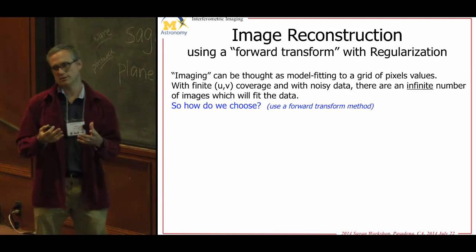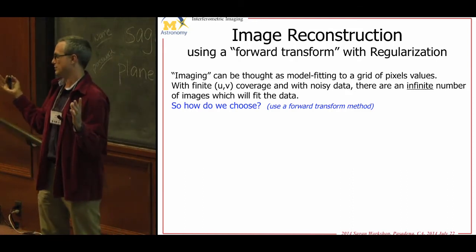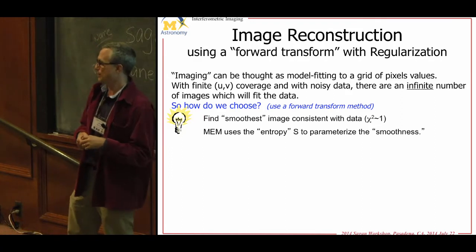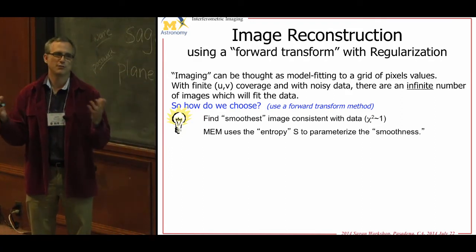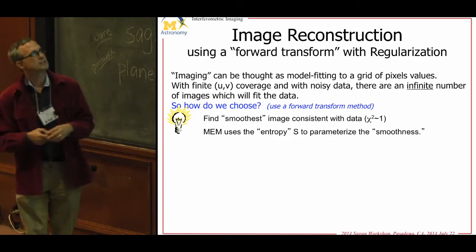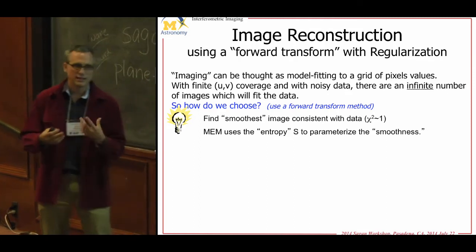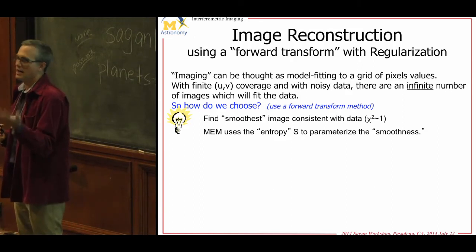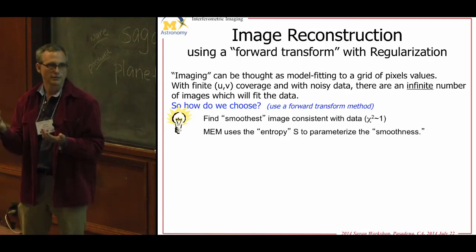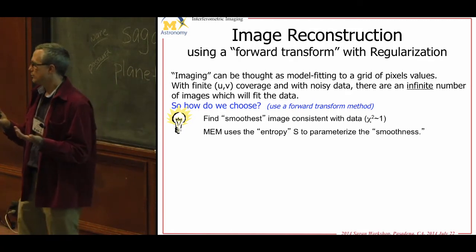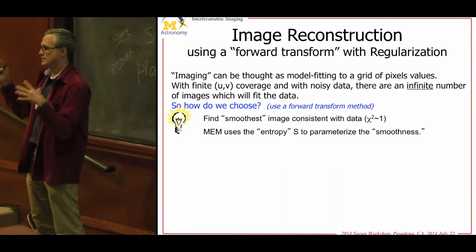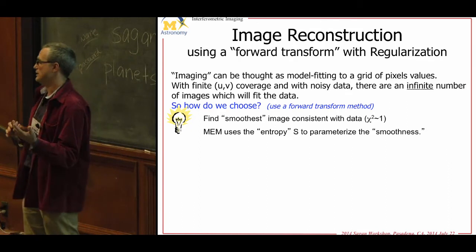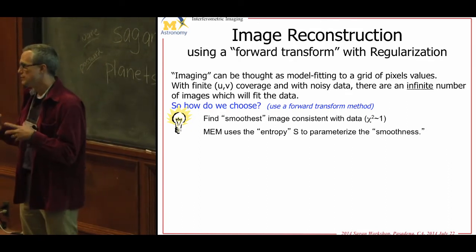You start with hundreds or thousands of degrees of freedom in your fit, but you usually don't have thousands of data points. So how do you do a model fit with thousands of free parameters but only 50 data points? This is an ill-posed problem requiring a regularizer. There is not a unique solution, and there's finite noisy data. You couple a chi-squared analysis for goodness of fit with a regularizer. Usually you want a regularizer for smoothness — not crazy speckly images. You can also impose constraints like positivity in the forward process.